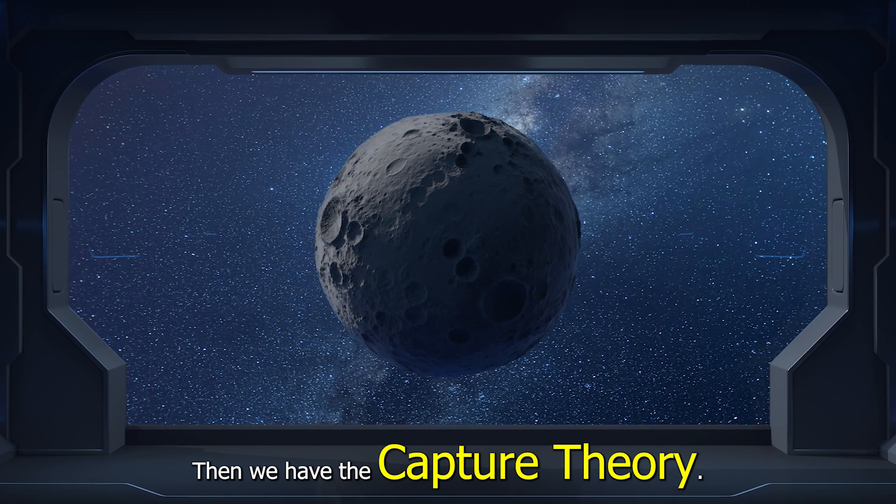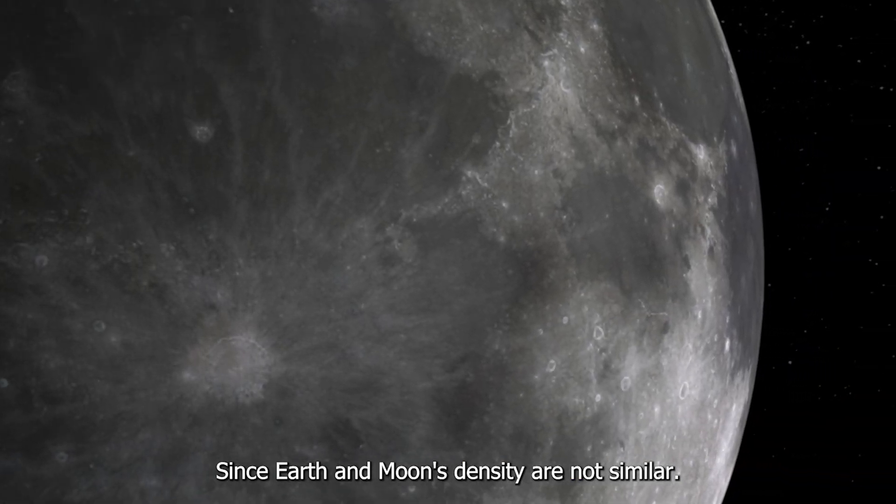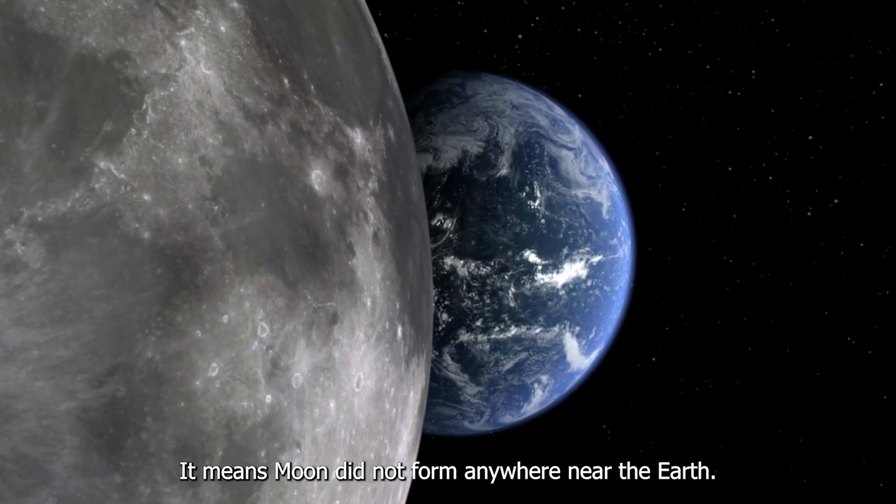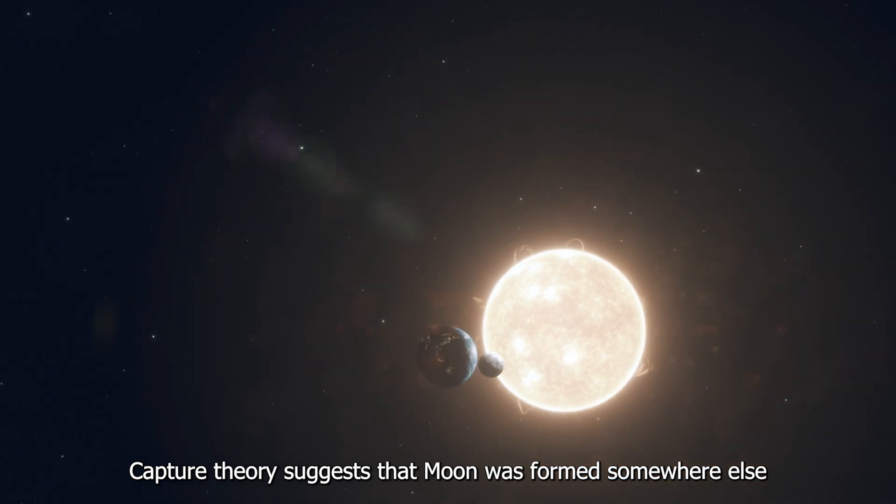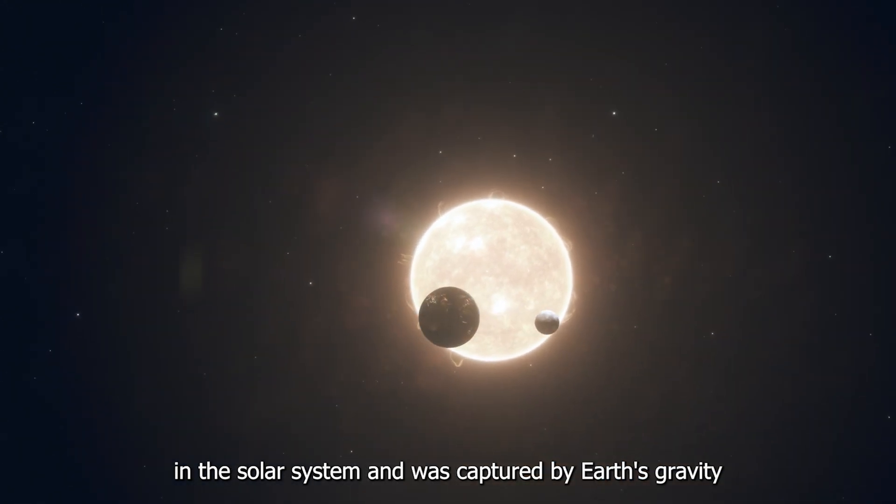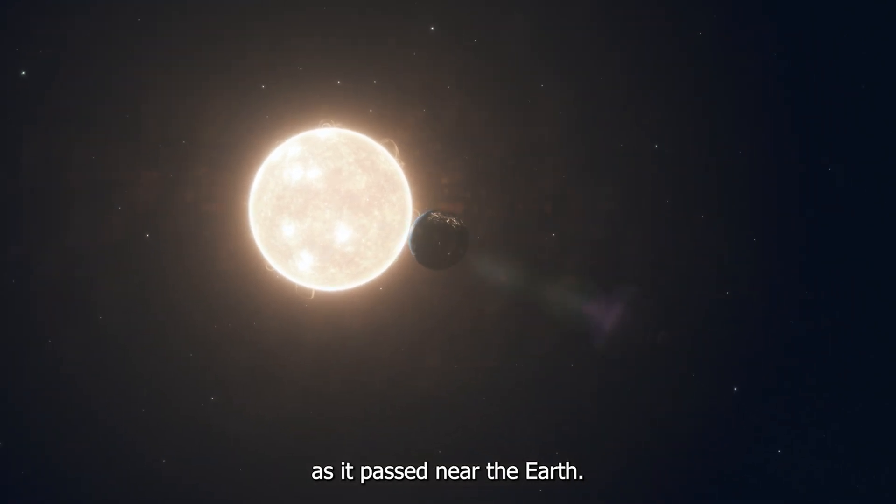Then we have the capture theory. Since Earth and Moon's density are not similar, it means the Moon did not form anywhere near the Earth. Capture theory suggests that the Moon was formed somewhere else in the solar system and was captured by Earth's gravity as it passed near the Earth.